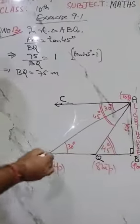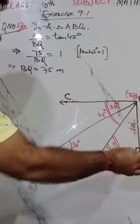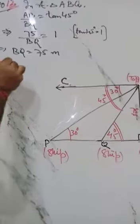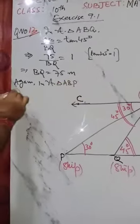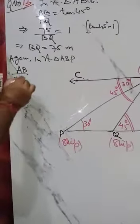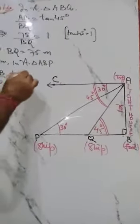Now in right triangle ABP, again AB upon BP, tan perpendicular upon base, and this angle is 30 degrees.